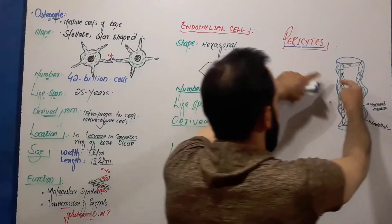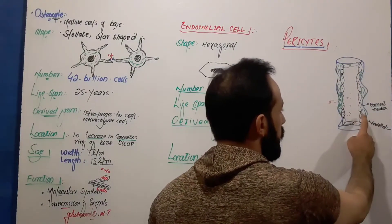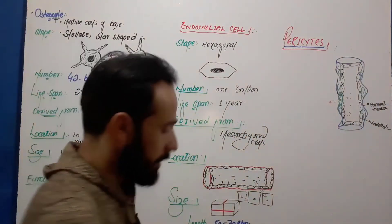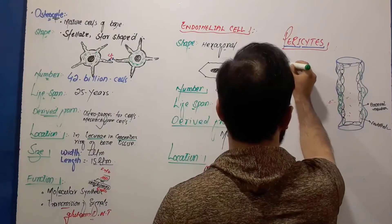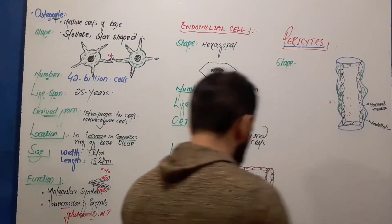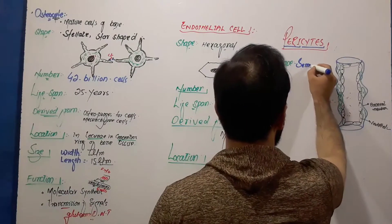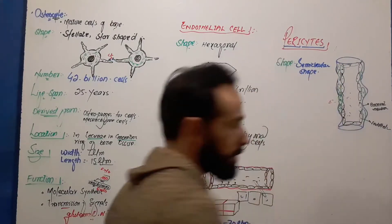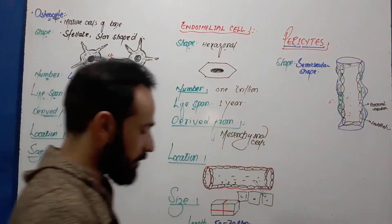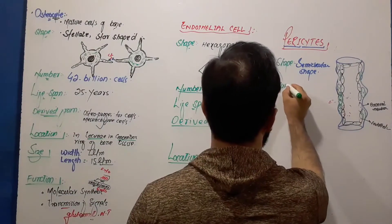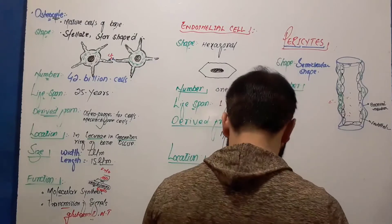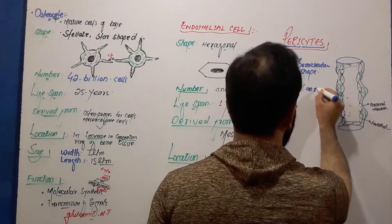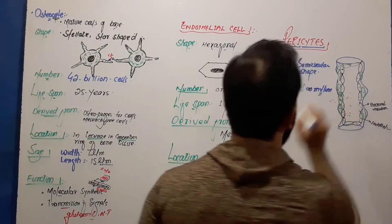Pericytes are present around the endothelial cells, which is why we call them pericytes. What is their shape? The shape of pericyte cells is semi-circular. How many pericytes are present in your body? There are about 100 million pericytes found in the human body.